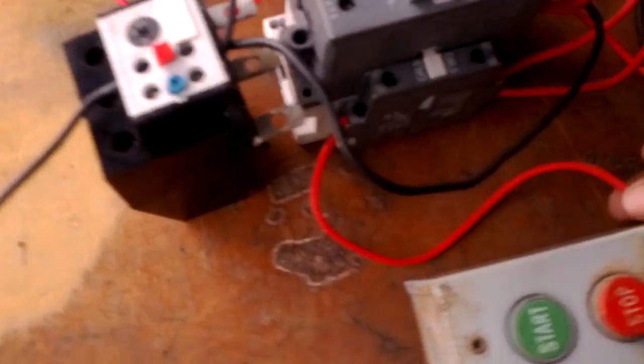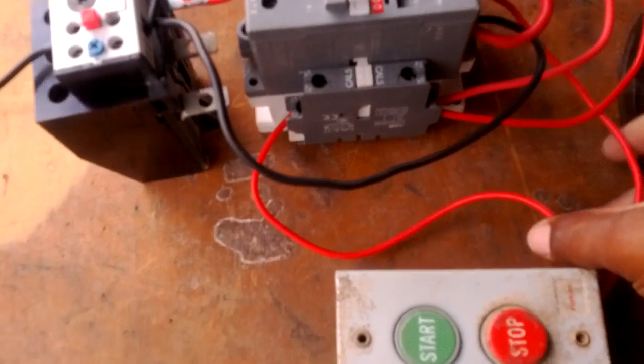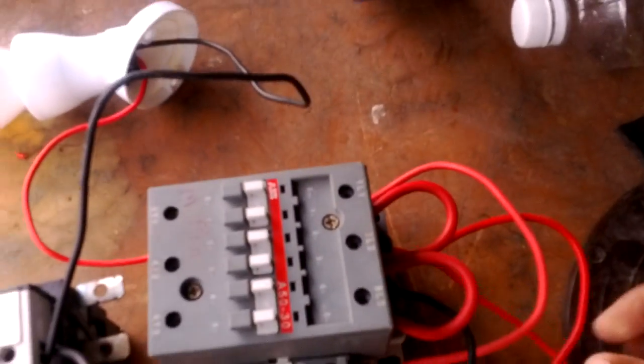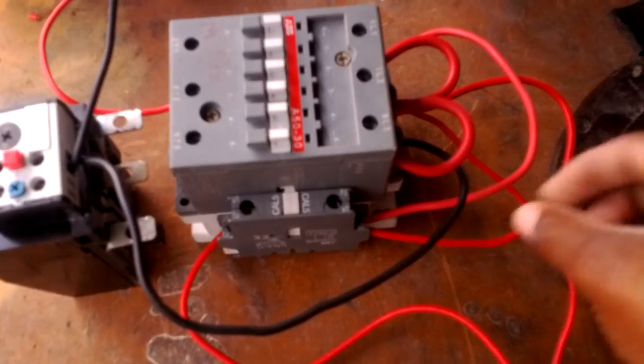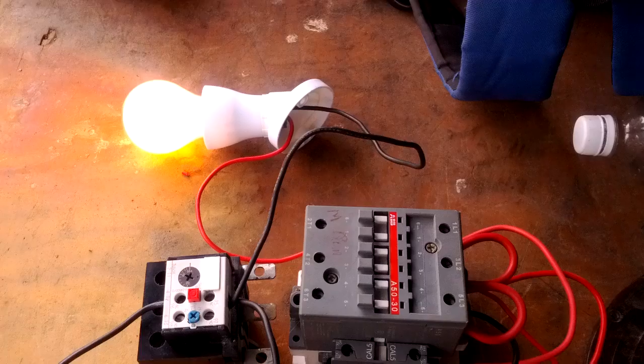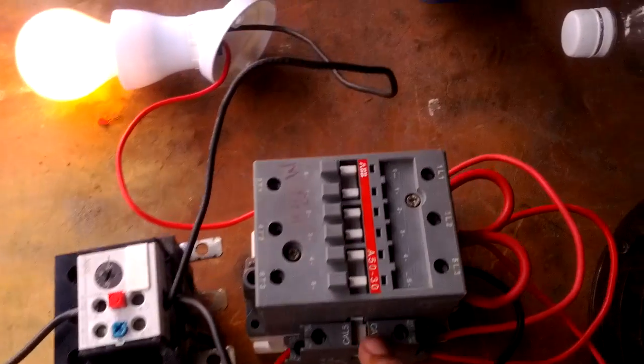So keep in mind, two wires from the normally closed part of your stop button. One wire is for the holding circuit, and this wire is for my coil itself. So when my coil slams in, it stays in. This is my holding circuit.